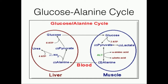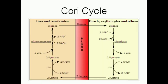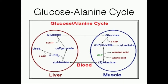Now we're going to focus on the glucose-alanine cycle. This pathway is similar to the Cori cycle, but different in one way: it does not actually use lactate, although the lactate dehydrogenase reaction is still working. It's instead going to use alanine, an amino acid. We have liver on the left and muscle on the right, and the transport fluid for each of these molecules is the blood.